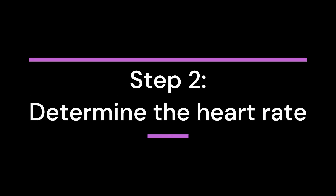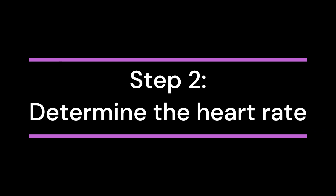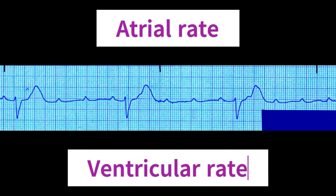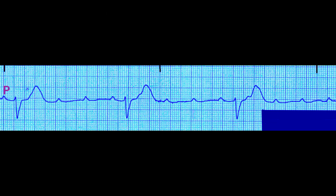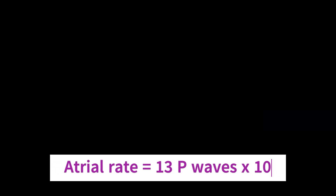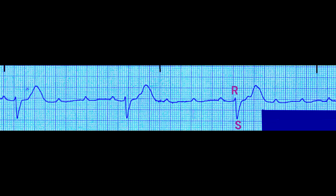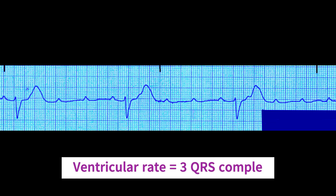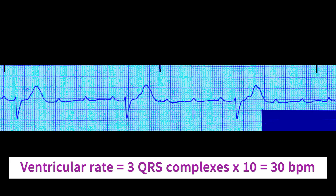Step 2: Determine the Heart Rate. There are two rates — the atrial rate and the ventricular rate. We count the number of P-waves in a 6-second section and multiply by 10 to get the atrial rate. In this example, there are 13 P-waves, giving an atrial rate of 130 beats per minute. Next, we count the number of QRS complexes, which in this example is 3, then multiply by 10 to get a ventricular rate of 30 beats per minute.